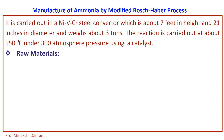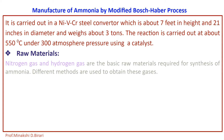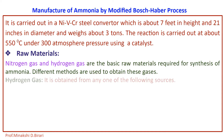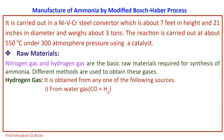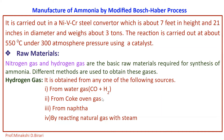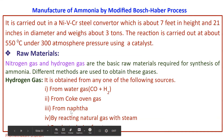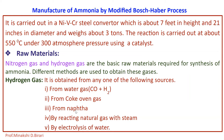What are the raw materials used in manufacturing of ammonia by modified Bosch-Haber process? Nitrogen gas and hydrogen gas are the basic raw materials required for synthesis of ammonia. Hydrogen gas is obtained from any one of the following sources: from water gas (CO + H2), from coke oven gas, from naphtha, by reacting natural gas with steam, and by electrolysis of water.